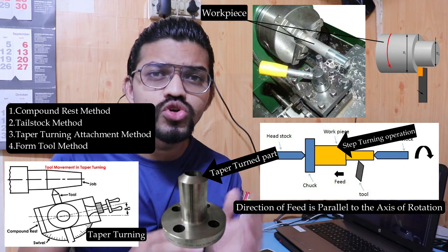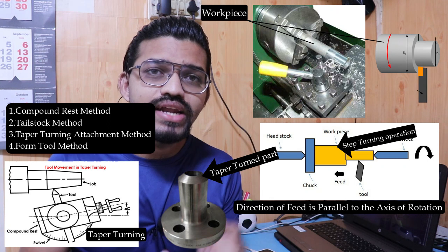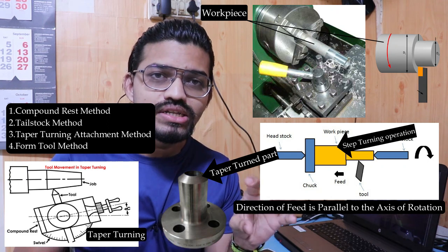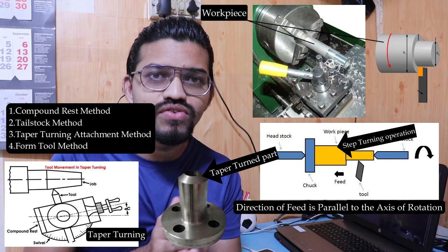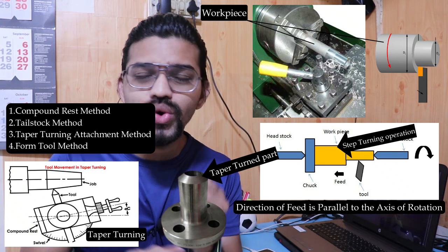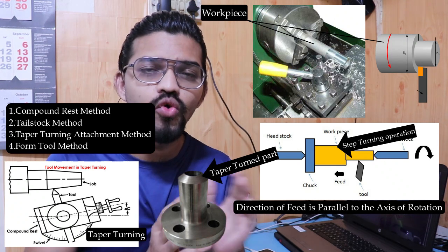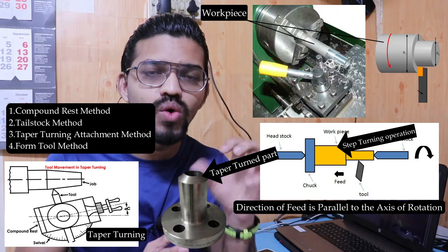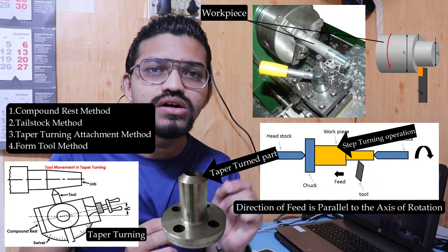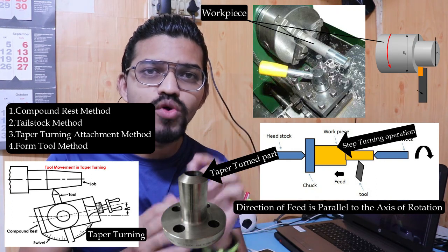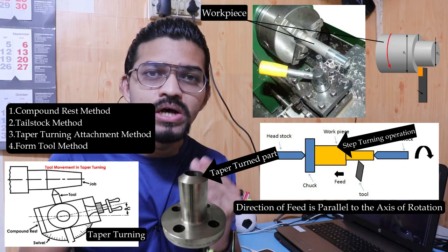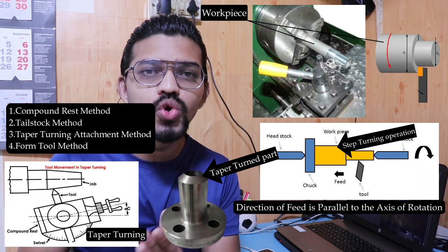The next operation is step turning. Here, different steps — meaning different diameters — are provided on the surface of the rotating workpiece. The resulting part has multiple diameter levels, and this is known as step turning or shoulder turning operation.